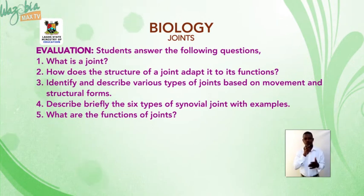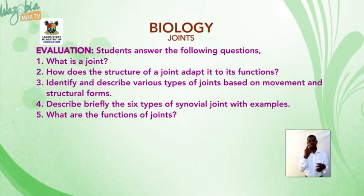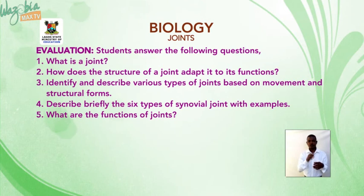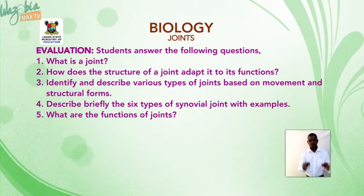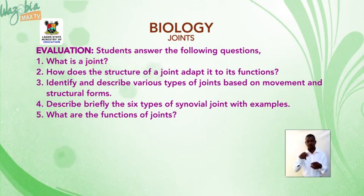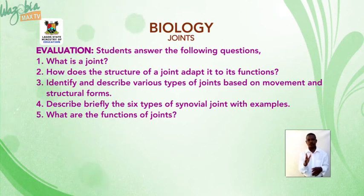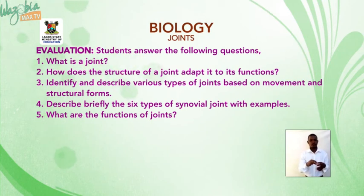Evaluation — students answer the following questions: 1. What is a joint? 2. How is the structure of a joint adapted to its function? 3. Identify and describe various types of joints based on movement and structural forms. 4. Describe briefly the six types of synovial joints with examples. 5. What are the functions of joints?